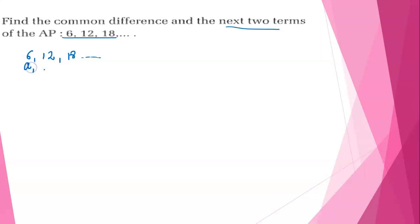So the first term is A1, second term is A2, and the third term is A3. We need to find the difference.